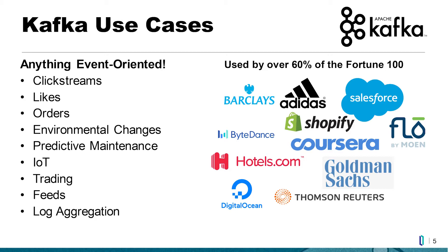Many current InterSystems customers are already using Kafka with IRIS. One very large financial firm uses Kafka for processing market data and order flows — interest in trade flows in and orders flow out. On the healthcare side, we have one very large customer who uses Kafka to manage large flows of FHIR messages. They get hundreds of thousands, millions of FHIR messages very quickly — once a month or once a week — and they can then process those messages over a long period of time without worrying about losing any of that information.